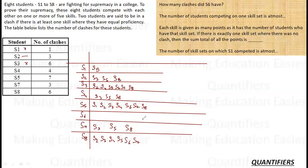S4 needs one more clash. S2 and S1 are not available, so the remaining person is S6. S6 itself has four clashes — already accounted for with S3, S5, S8, and S4. So S6 did not clash with S1, S2, or S7. That completes the clash mapping for all students.